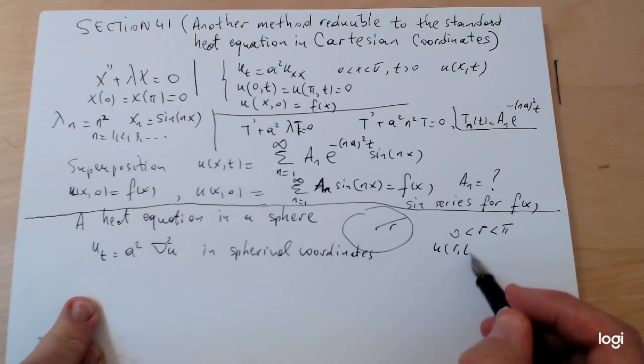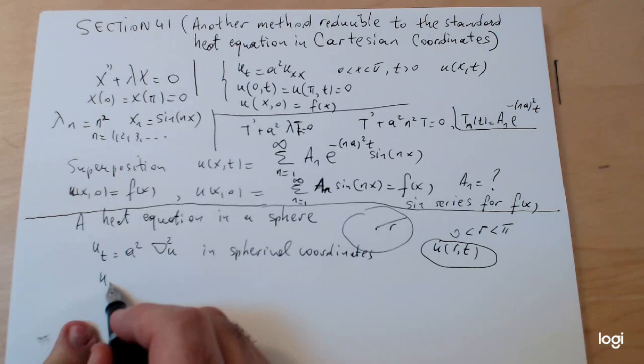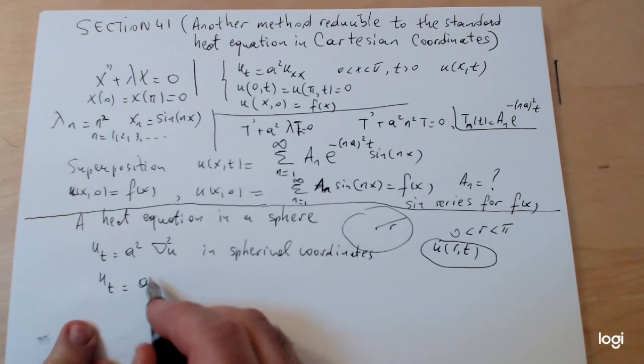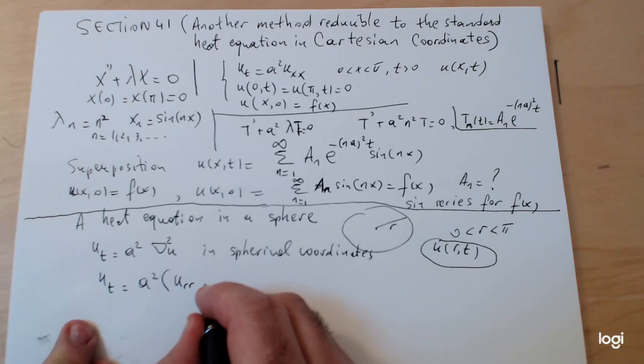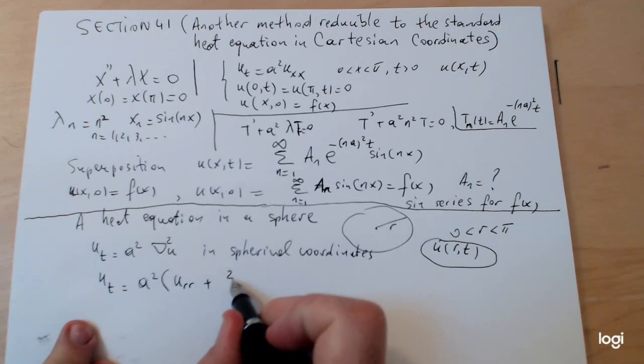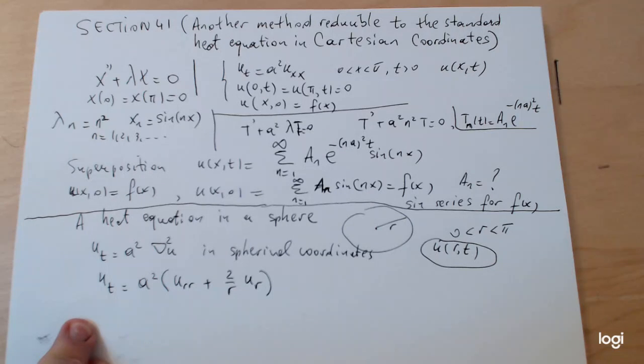u_t = a² [u_rr + (2/r)u_r]. So this is the heat equation in the spherical coordinates under these assumptions.